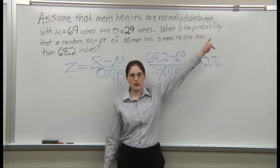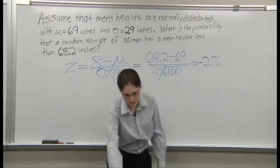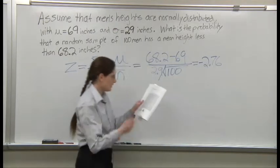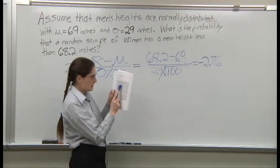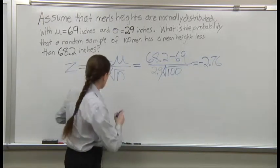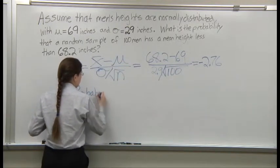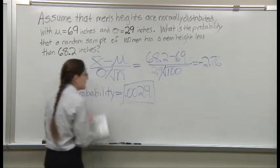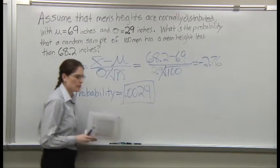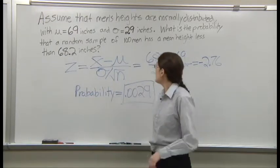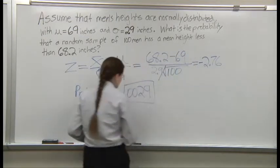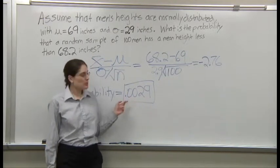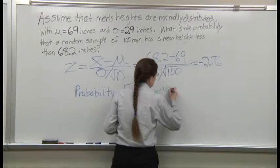But we were asked, what is the probability? How do we turn a Z into a probability? With the Z table. So we look on the Z table. Negative 2.76, 0.0029. That's what we got from the table. Is that the actual probability? Do we need to do any one minusing or anything? Nope. Because it said less than. So that's 0.0029. That's less than 1%. This probability is very small.